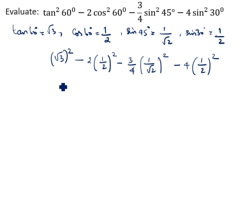√3 times √3 is 3, minus 2 times (1/2) squared is 1/4, minus (3/4) times (1/√2)² minus 4 times (1/2)². The 4 cancels - 1 times 2 is 2, 2 times 2 is 4. So 3 minus 1/2 minus 3/8 minus 1.